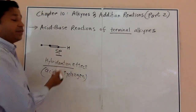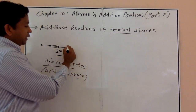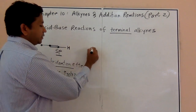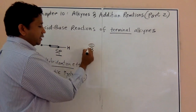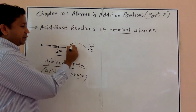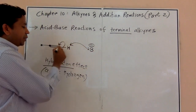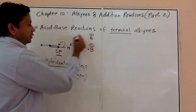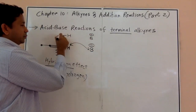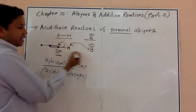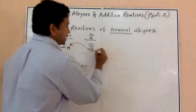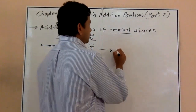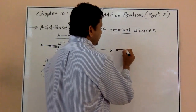If I throw a base, the base can go ahead and pick up that hydrogen. So if I throw a base B⁻, it can pick up the hydrogen and give the electron pair back on that carbon. So B⁻ is your base and HA is your acid. What you'll get is your conjugate acid and conjugate base as your products.